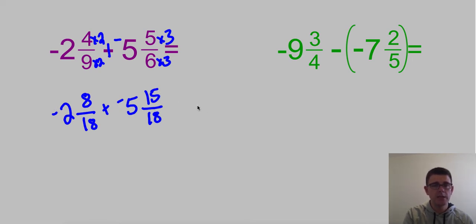8/18 and 15/18, they're both negative. So we're going to keep the signs. 8 and 15 is 23/18. 2 and 5 is 7, and it's going to stay negative. If you want to write a little negative on your fractions during the problem, that's fine.